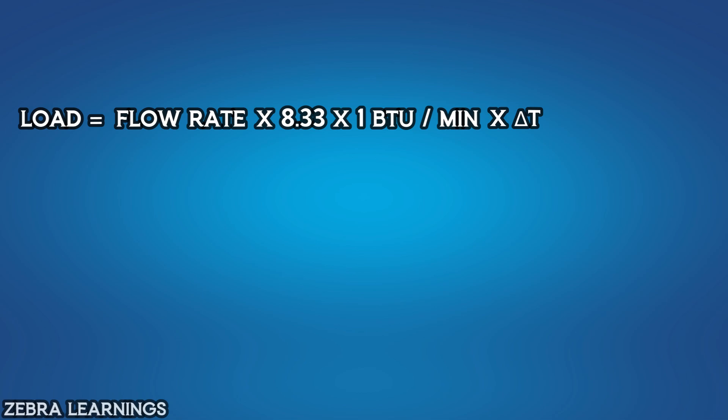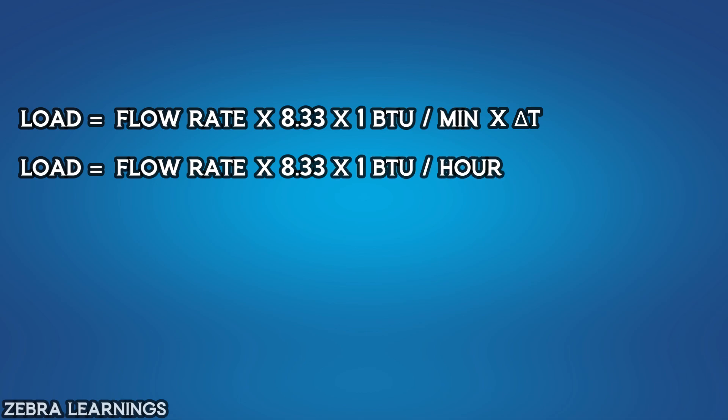In this, we need to convert minutes to hours. To convert from minutes to hours, we multiply by 60. So load equals flow rate multiply 8.33 multiply 1 BTU per hour multiply 60 multiply delta T.